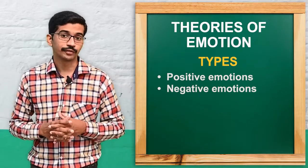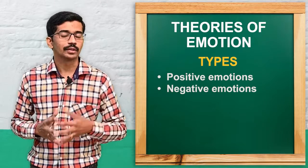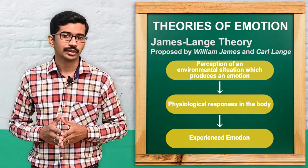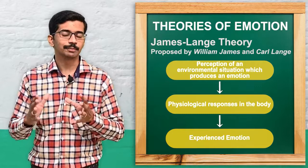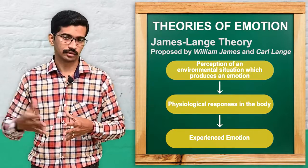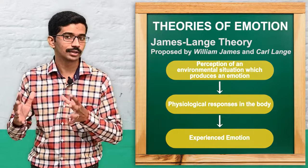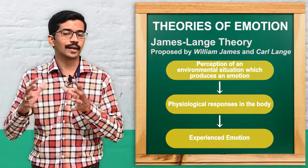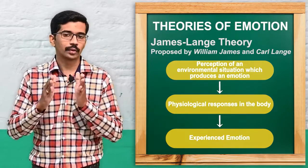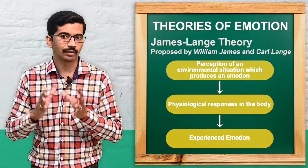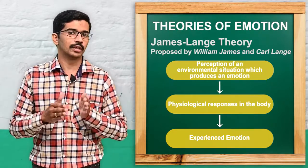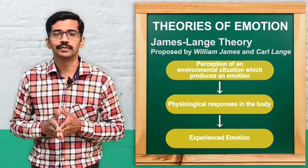Now we will move to the theories of emotion. There are mainly three important theories. The first theory is the James-Lange theory, proposed by two psychologists, William James and Carl Lange. According to the James-Lange theory, first we perceive a situation that produces an emotion, and according to the perception of that situation, certain physiological changes happen in our body. As a result of these physiological changes, we will experience the emotion.